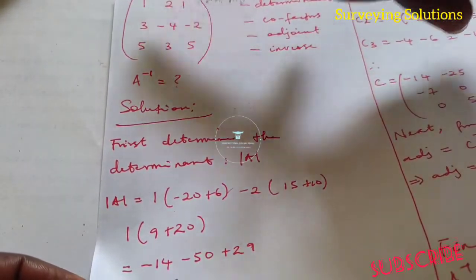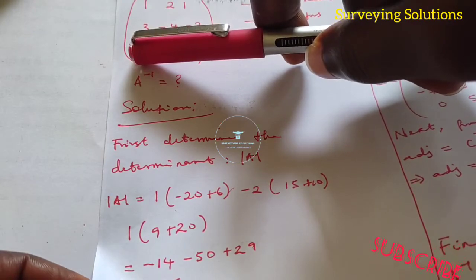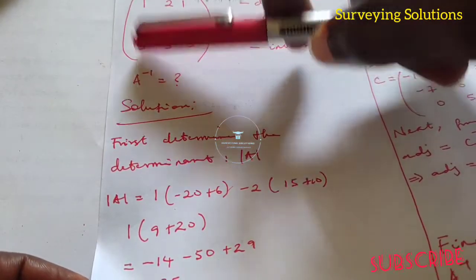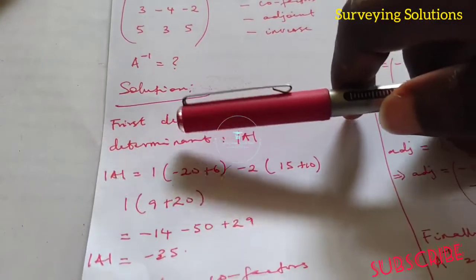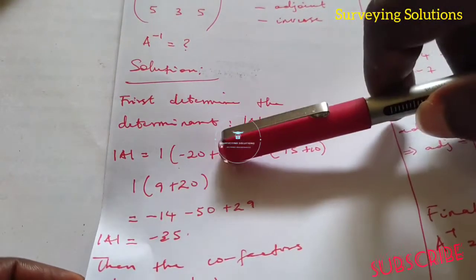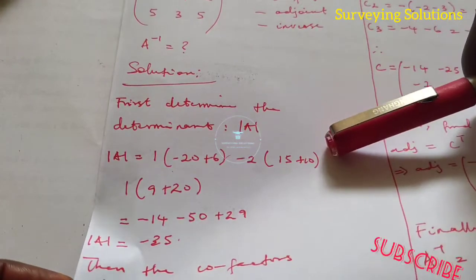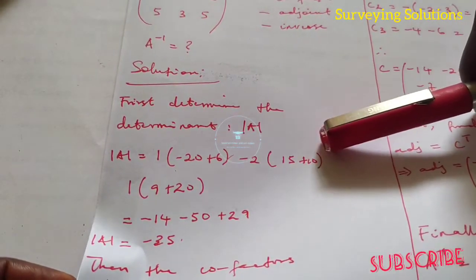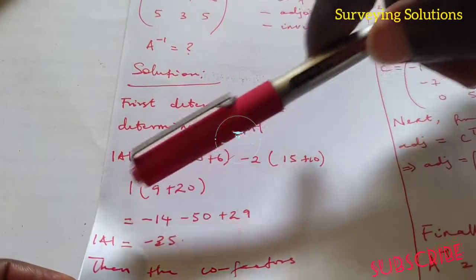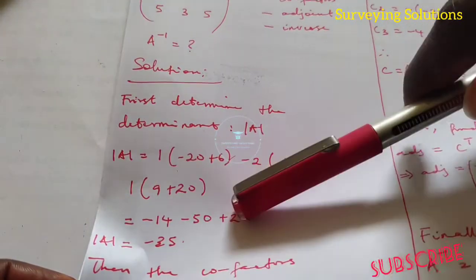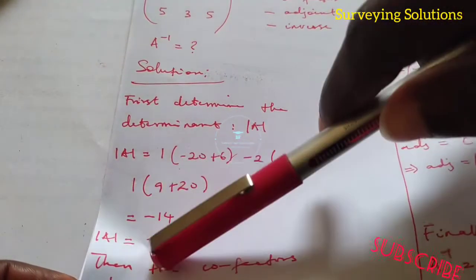Then we come to this last one — this row and this column are out. We have 3 times 3 which is 9, then minus 4 times 5 which is minus 20, but since there is still another minus there it changes to plus 20. Simplifying: minus 20 plus 6 is minus 14 times 1, so minus 14. Then 15 plus 10 is 25 times minus 2 which is minus 50. Then 9 plus 20 is 29 times 1 which is 29. Adding all of them together gives you minus 35.